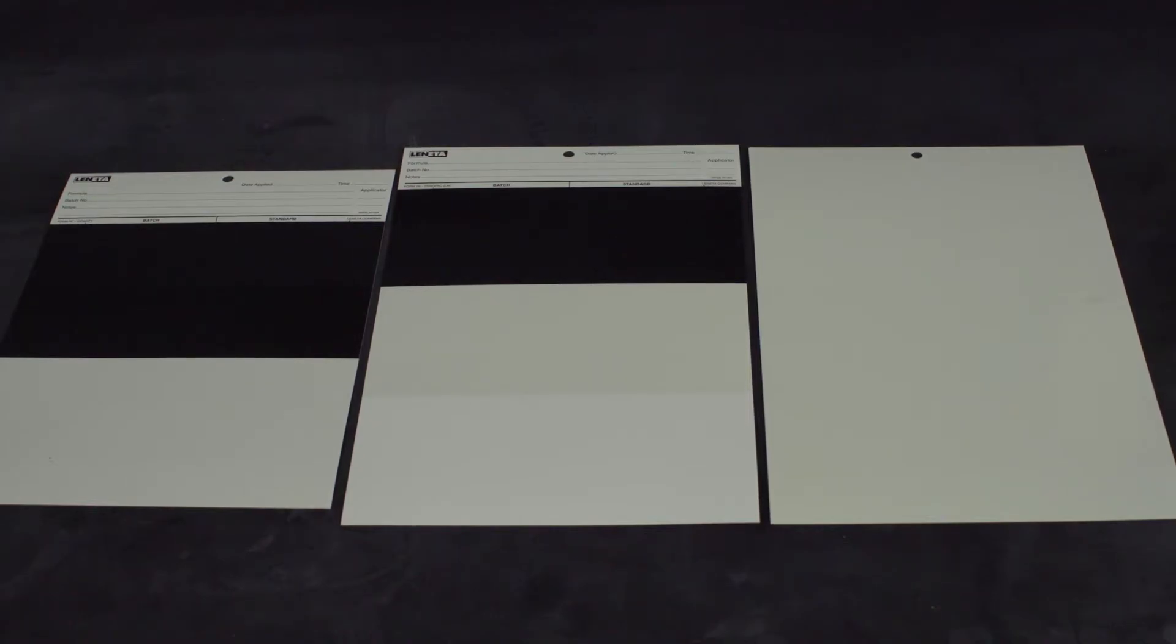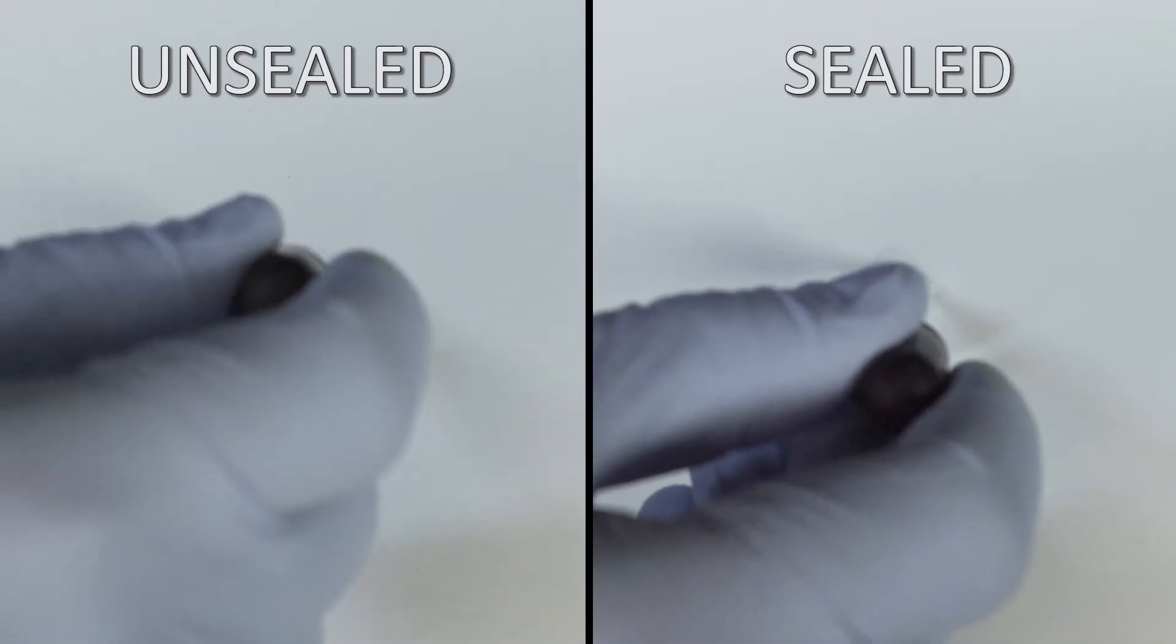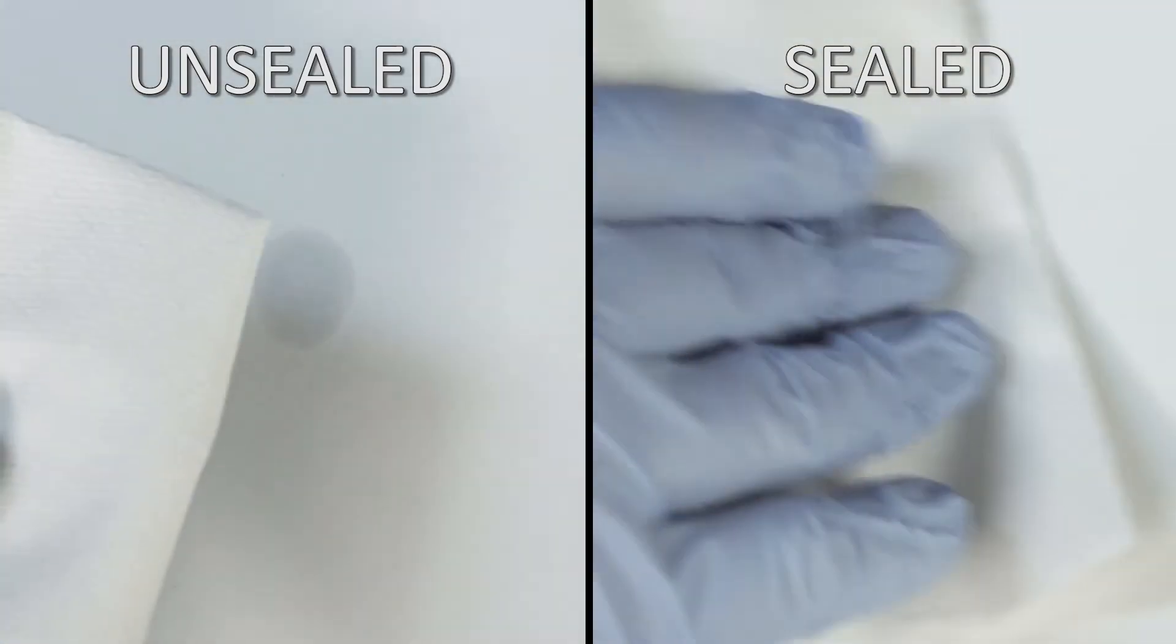The most popular substrate for making drawdowns is a paper drawdown chart. Most users require charts which are sealed with a clear impervious topcoat so that none of the applied paint is absorbed into the paper.